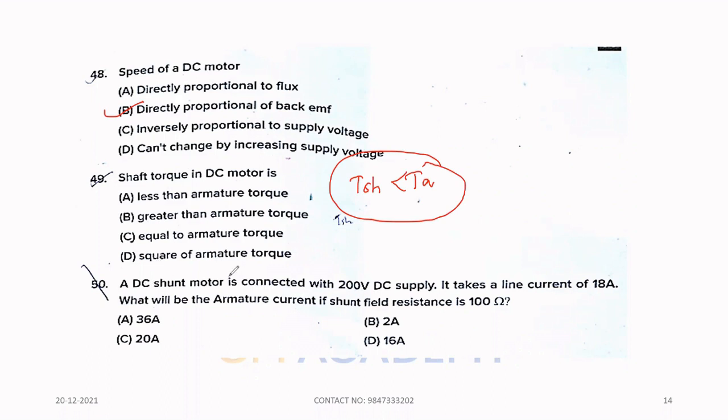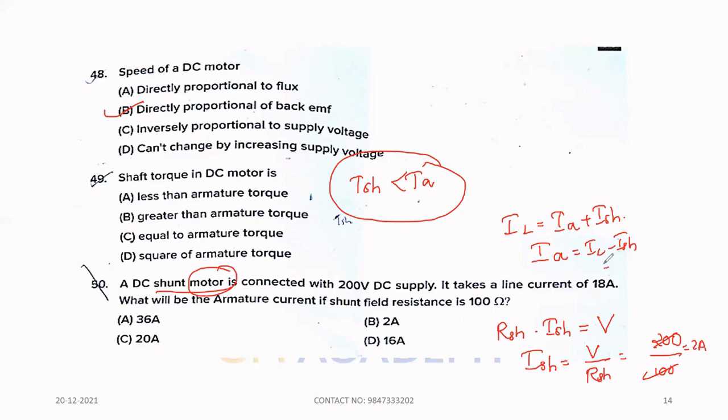Fiftieth question. A DC shunt motor is connected with 200 volt DC supply. It takes a line current of 18 ampere. What will be the armature current if shunt field resistance is 100? This is a shunt motor. Shunt field current equals V divided by R. That is 200 divided by 100, that is 2 ampere. Load current equals armature current plus shunt field current. So, load current minus shunt field current is 18 minus 2, that is 16 ampere. Option D is the correct answer.